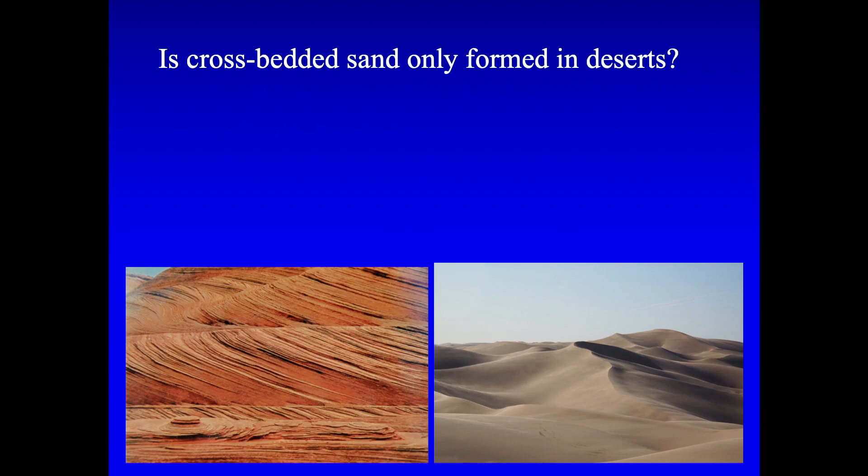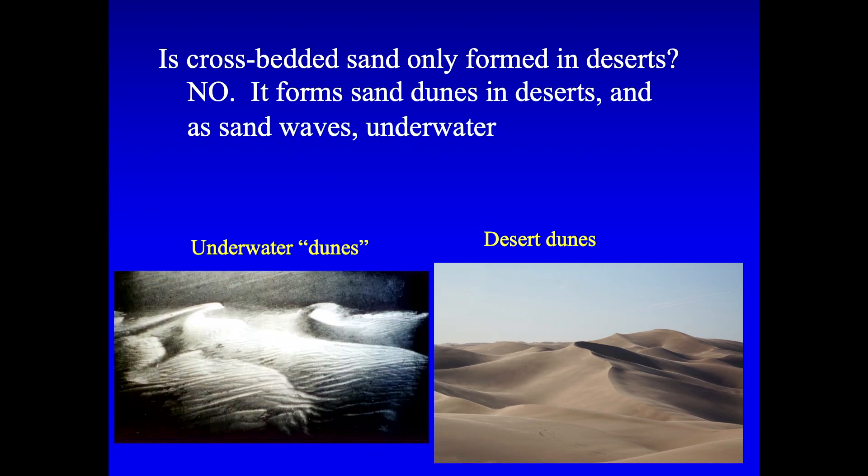But we should ask also, is crossbedded sand only formed in deserts? And the answer is no. It forms sand dunes in the deserts and sand waves underwater. The sand waves really are pretty much the same as sand dunes in terms of the kind of deposit that they make. So either one, wind and water will do similar things to sand. So you can have the same kind of deposit.